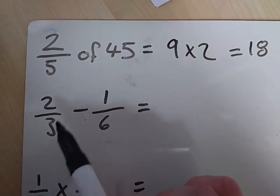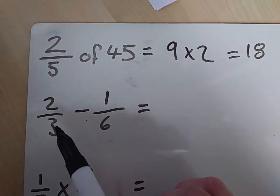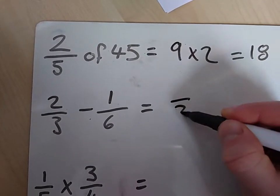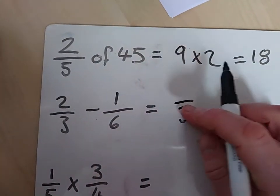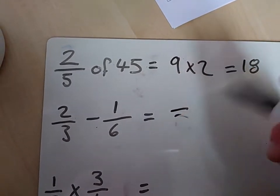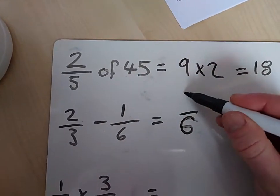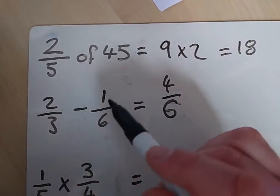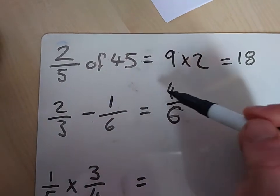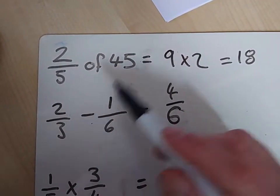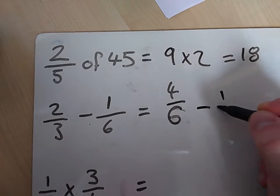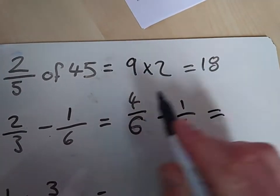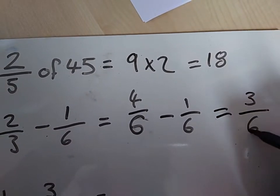Now, remember that we want the bottom numbers to be the same. If I change this one into sixths, I've got to times 2 to get that 3 into a 6. And as long as I do the same with the top number, I times the bottom and the top number, the numerator and the denominator, by 2, I can get 4 sixths. Now 4 sixths is exactly the same as 2 thirds. Now I've got 4 sixths take away 1 sixths, and the bottom numbers are the same now, they're both out of 6. So I can just take them away, which is 3 sixths.